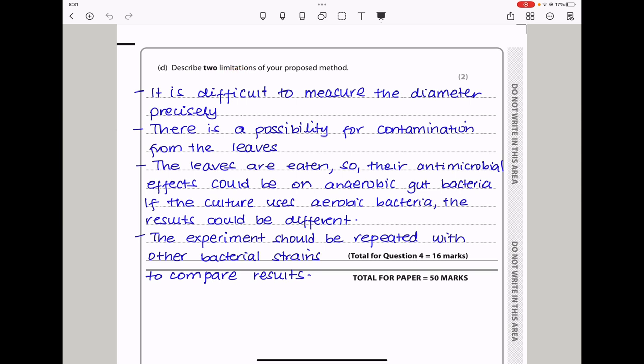Lastly, they say describe two limitations of your proposed method. Now, the proposed method, the measurement of my dependent variable was measuring the diameter of the zone of inhibition. This could be difficult to measure the diameter precisely. Also, there is a possibility of contamination because I'm extracting plant material. Some microorganisms could be already present on the leaves of these plants. The leaves are eaten, so their antimicrobial effects could be on anaerobic bacteria inside the gut, yet I'm trying to work with aerobic bacteria that I'm culturing on the agar plate, so that could also be a source of errors. Again, the experiment should be repeated with other bacteria strains in order to establish validity of the results.